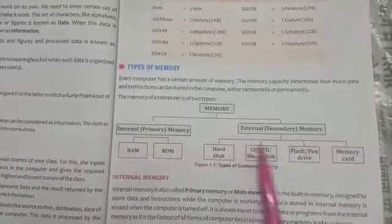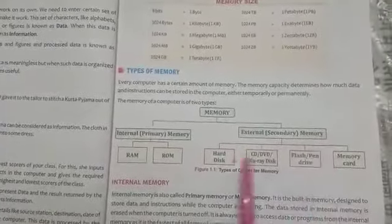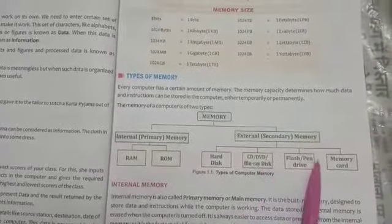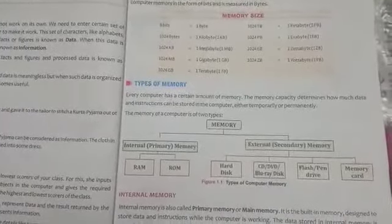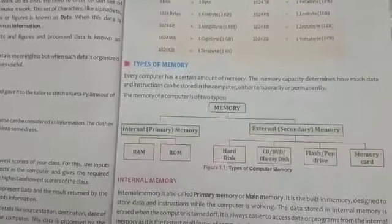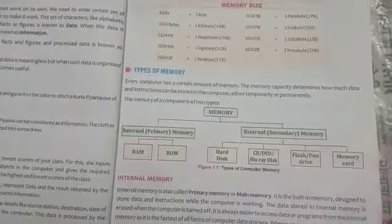External memory includes different types of secondary memory: hard disk, CD, DVD, pen drive, memory card. These are externally used for data input.